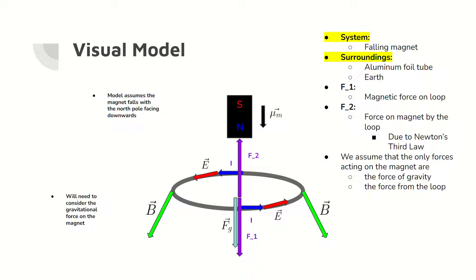Here is the visual model for this lab. The system is the magnet and the surroundings include the aluminum foil tube and the earth. There are three forces that are assumed to be present: the magnetic force on the loop, the force on the magnet by the loop, and the gravitational force on the magnet.